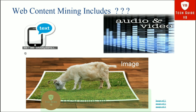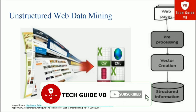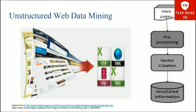Regarding unstructured web data mining: unstructured data includes audio and video. The process of converting unstructured data into useful structured information works as follows — web pages are pre-processed to form a vector representation, and from that vector, structured information is generated. Through this process, web pages available on the web are transformed into structured information.